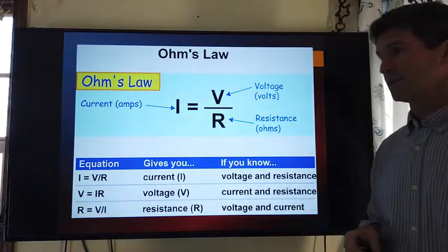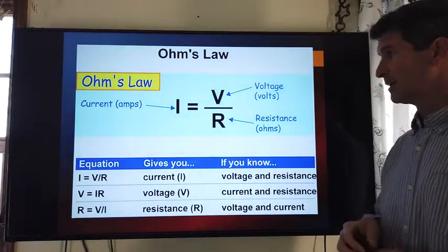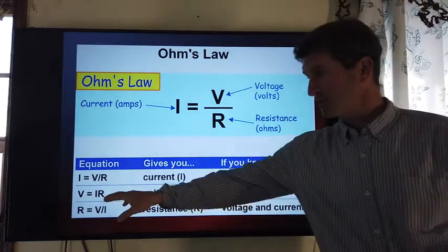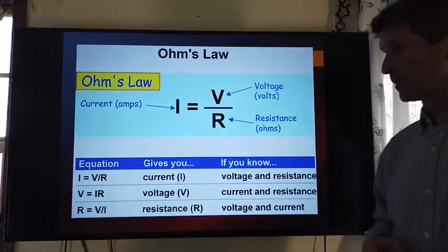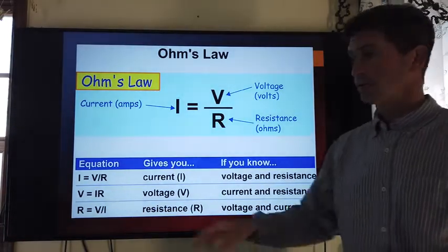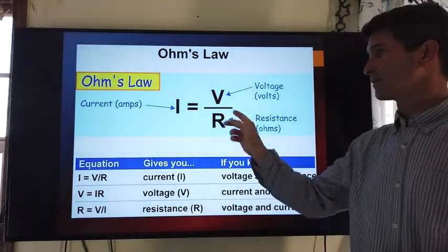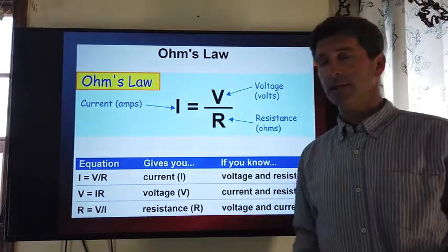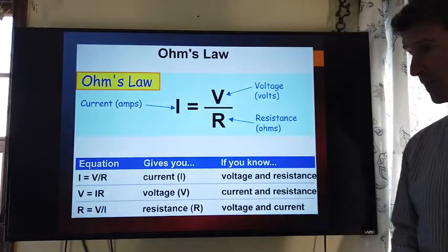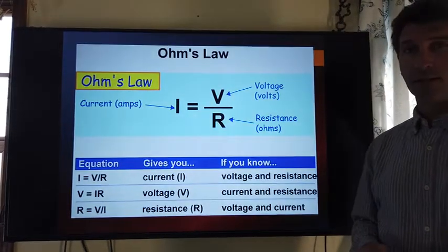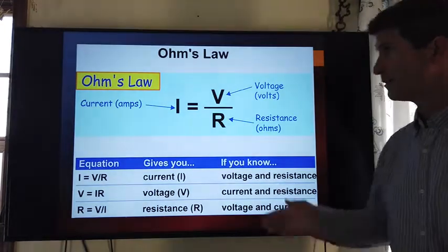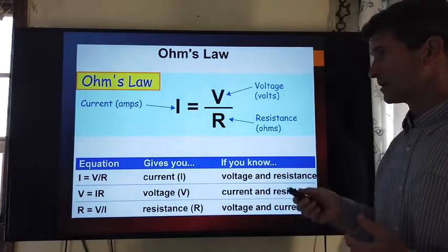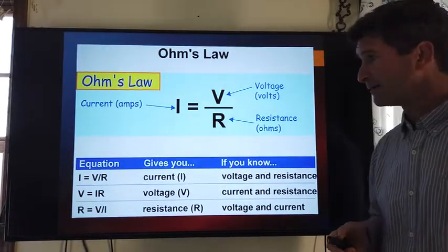In any case, we can manipulate this law many different ways. We can write it in its most traditional form, V equals IR. We can solve for current instead. Current is equal to voltage divided by resistance. Where finally, we can calculate the resistance as a function of the voltage divided by the current. So V equals IR, very useful equation. We're going to use it for many of the chapters coming up.